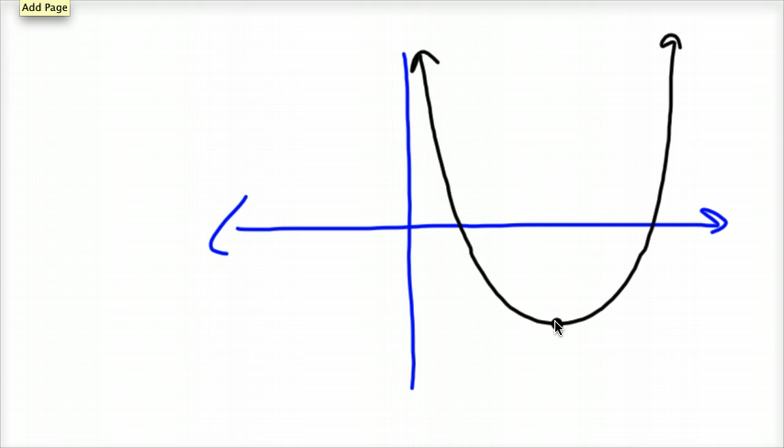The first thing is this point here at the very bottom, or could be at the very top, that is called your vertex. Notice this graph has an axis of symmetry. Vertex is that h, k value I gave you before. This axis of symmetry, if it's opening up and down, is just x equals that h value.